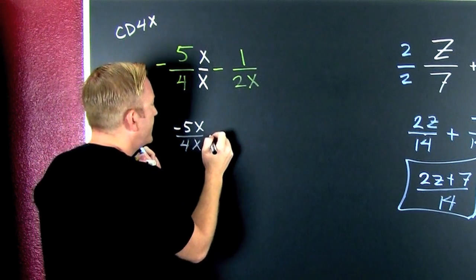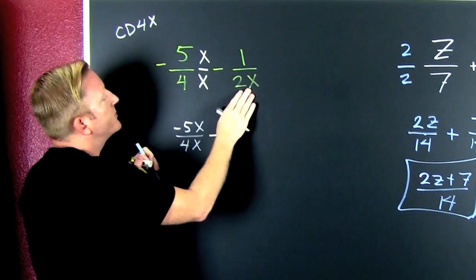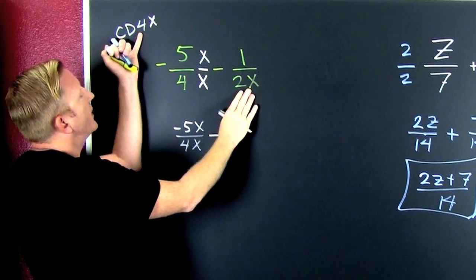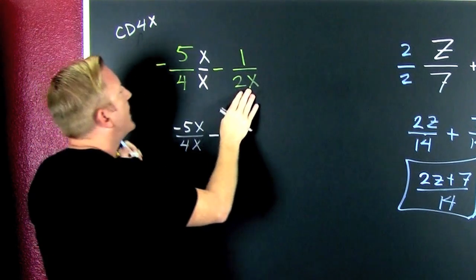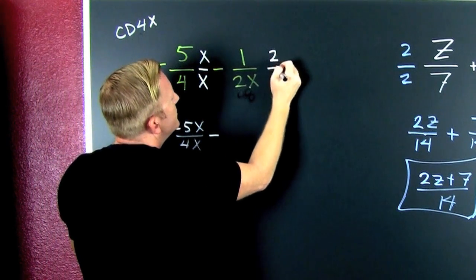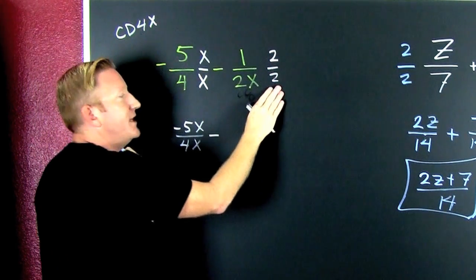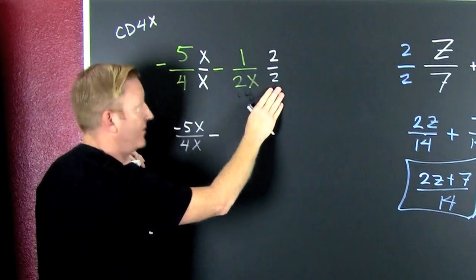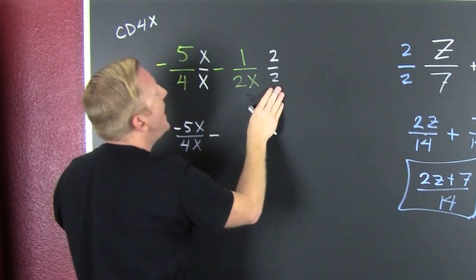And then, I need to subtract off. What do I multiply 2X by to get a 4X? A deuce. So, I deduce that I multiply this by a deuce over a deuce. But what is this? This is one! I got the magic one.